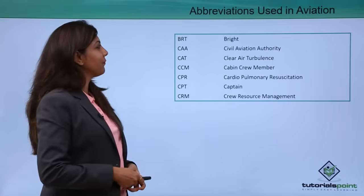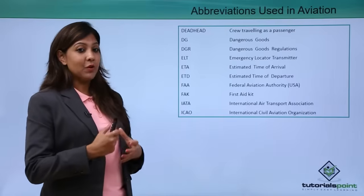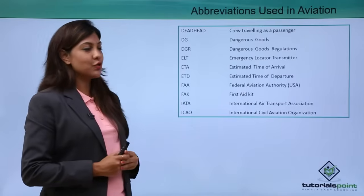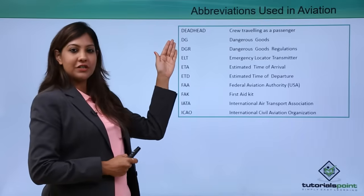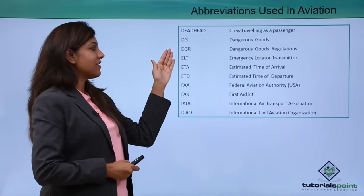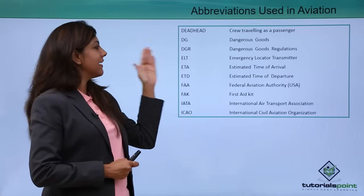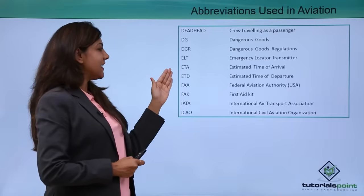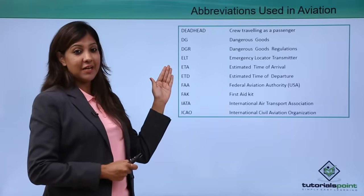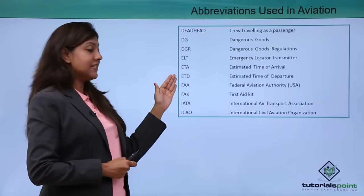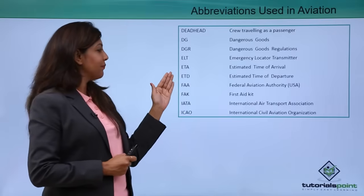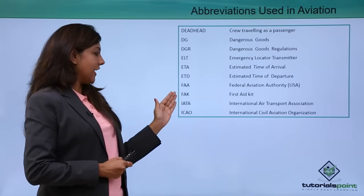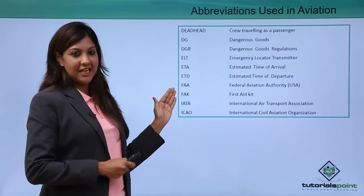CRM stands for crew resource management. Deadhead stands for crew which is traveling as a passenger. DG stands for dangerous goods. DGR stands for dangerous goods regulations. ELT stands for emergency locator transmitter. ETA stands for estimated time of arrival. ETD stands for estimated time of departure. FAA stands for federal aviation authority. FAK stands for first aid kit.